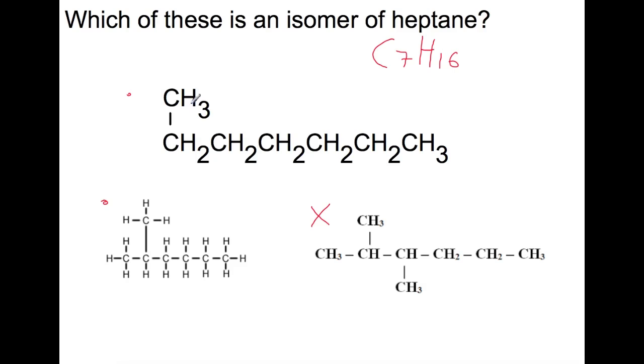We then have to decide between these two which is an isomer of heptane. The first one is a straight line of 7 carbons which is heptane. If we are looking for an isomer it has to have a different name and a different structure. So that would lead us to this one here.